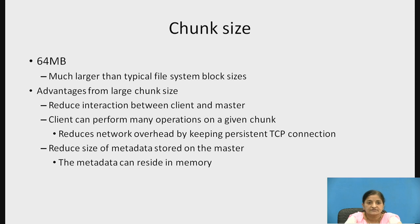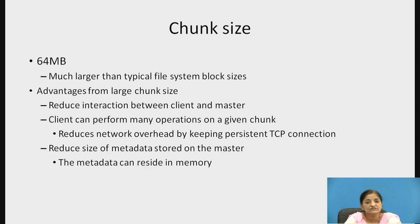The chunk size in GFS is 64 MB, which is much larger than the typical file system block size. The advantages of using such a large chunk size are: in one chunk fetch, many read and write operations can be performed, reducing the interaction between client and master for fetching new chunks. The client can perform many operations on a given chunk. It also reduces network overhead by keeping a persistent TCP connection and reduces the size of metadata stored on the master, since larger chunks mean fewer chunks overall.